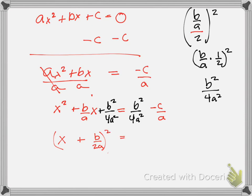And then what do I do on the right side so I can add and subtract? You have to have the same denominator, so I'm going to multiply by 4A over 4A. And so now I get B squared minus 4AC, all over 4A squared.